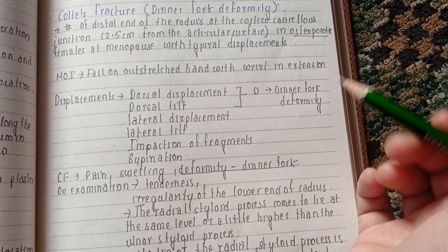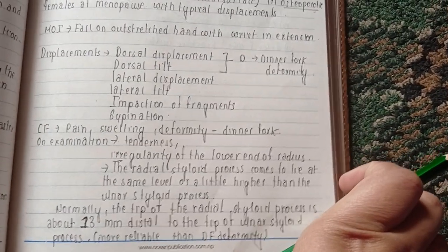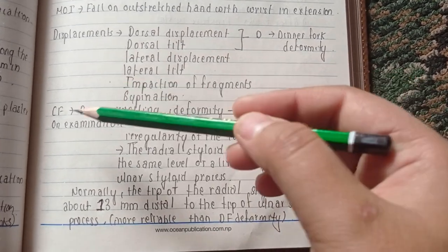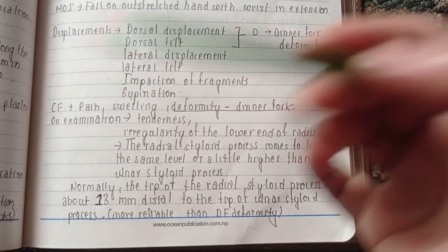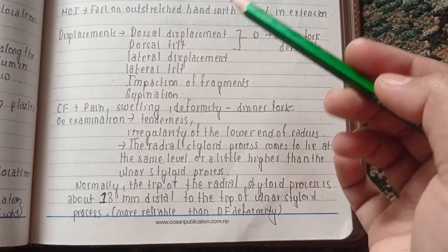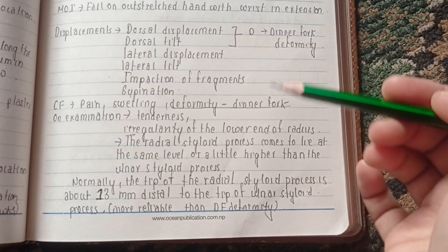Talking about clinical features, the typical features of fracture are swelling, pain, and deformity because there is displacement. What type of deformity? As I have mentioned, dinner fork deformity.